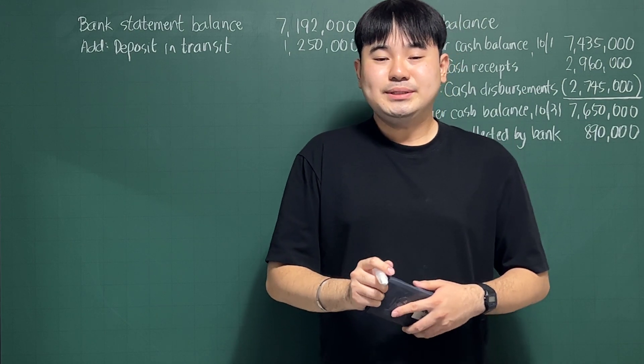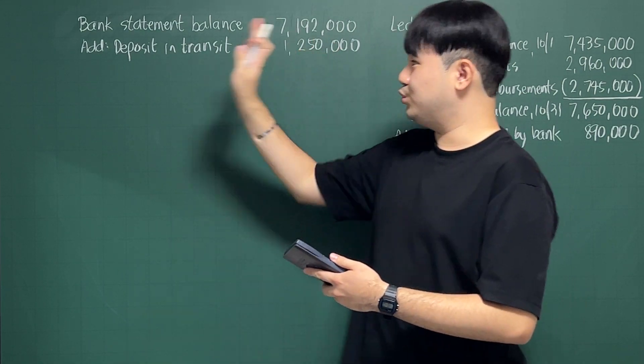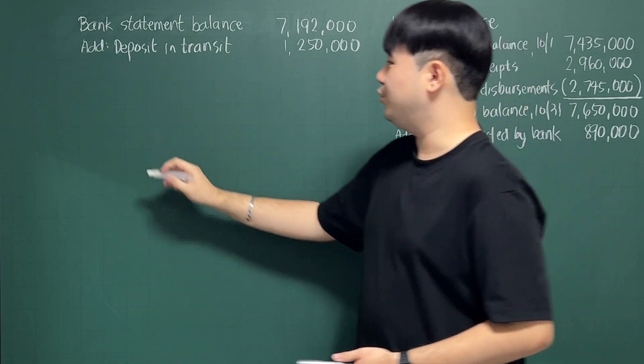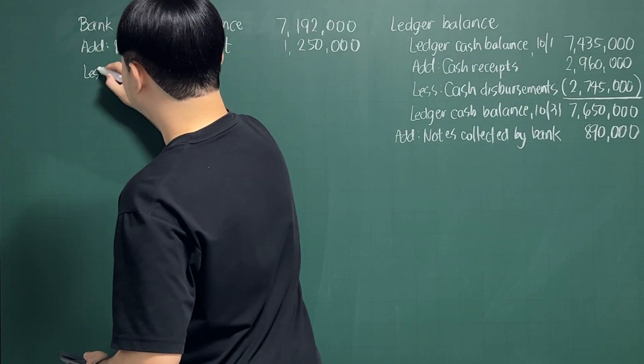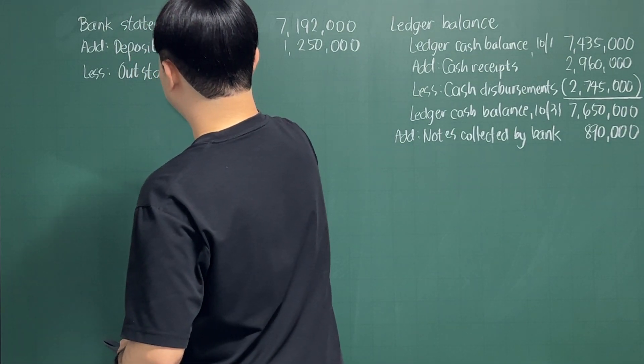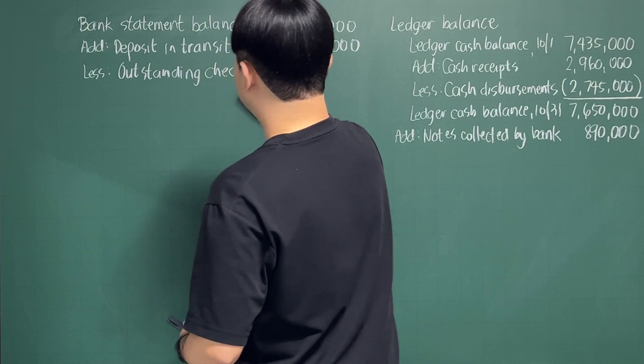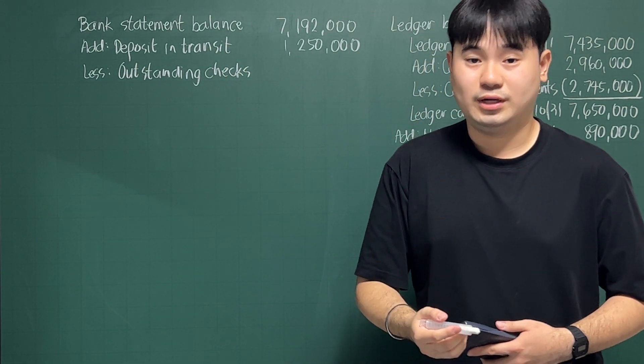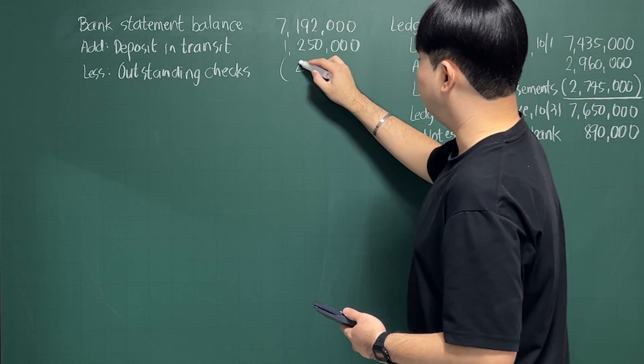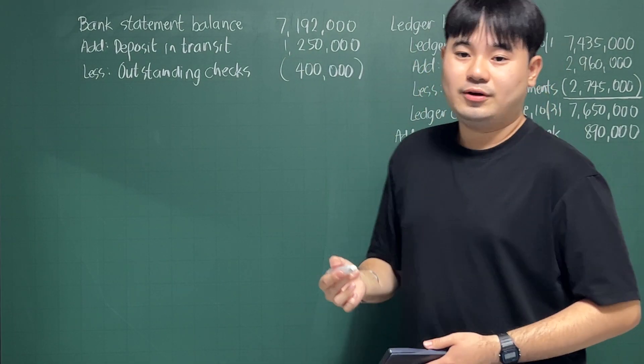Checks outstanding is $400,000. So outstanding checks goes to the bank side. So you have to deduct your outstanding checks amounting to $400,000.